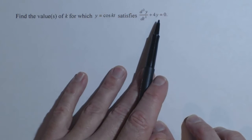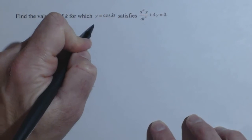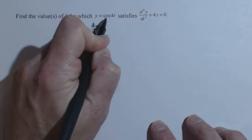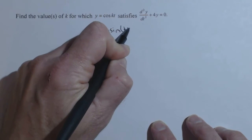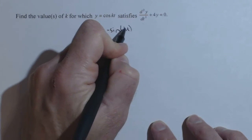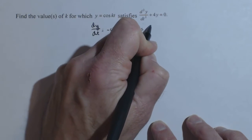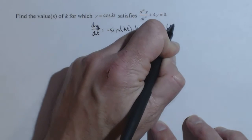So we know that y is cosine of kt, but we need to find the second derivative. So that's going to be our first task here. So our first derivative, derivative of cosine, is negative sine of kt. Now this is a chain rule, so times the derivative of the inside. So I'm going to rewrite this as negative k sine of kt.